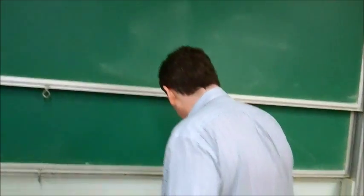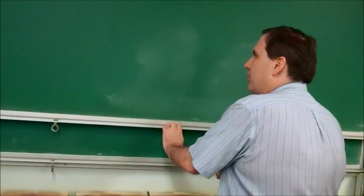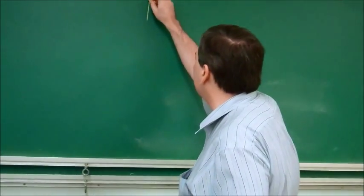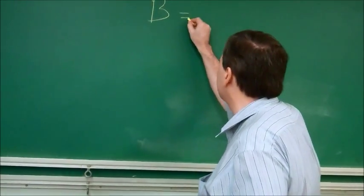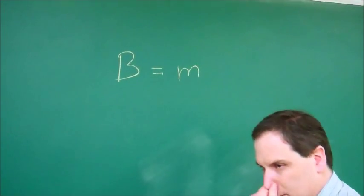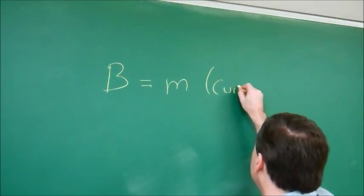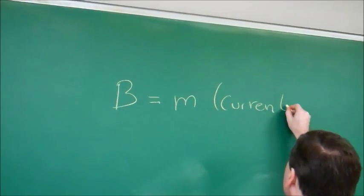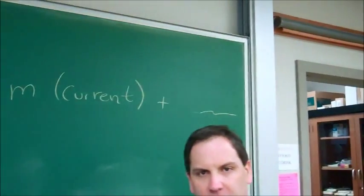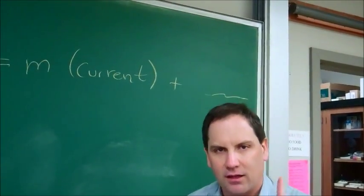When you plot your data and you get your trend line, you're going to get an equation that looks like this. Magnetic field equals your slope, m, times the current, plus a really small number that we're not going to worry about. If you don't get something that looks like that, you've got a problem.